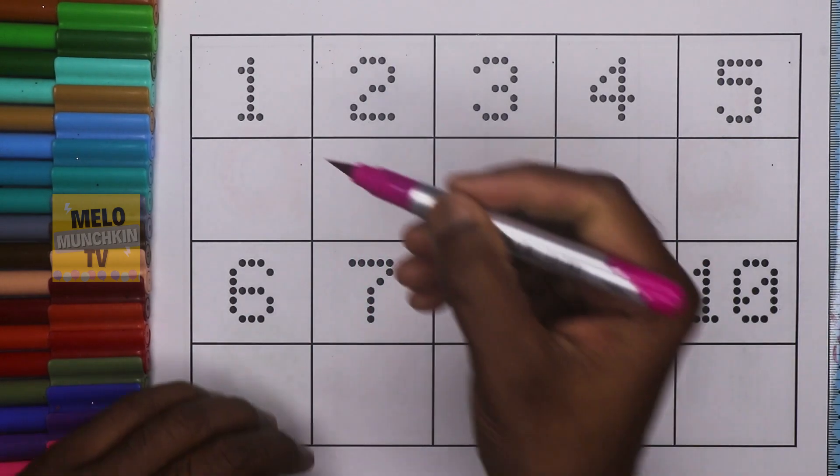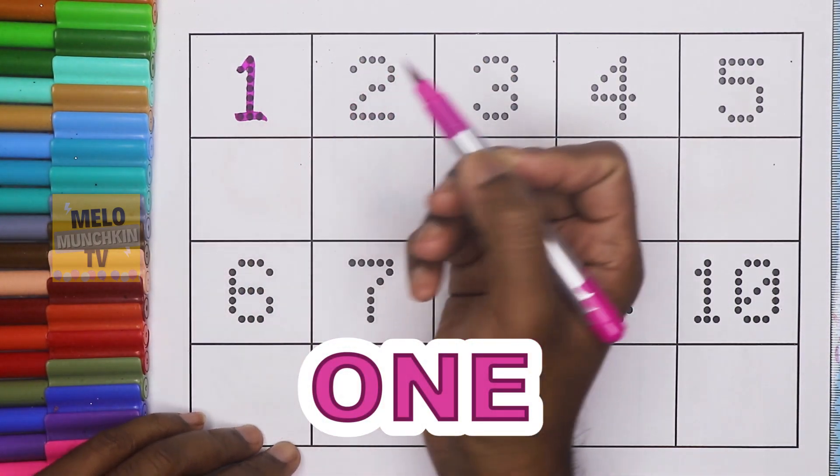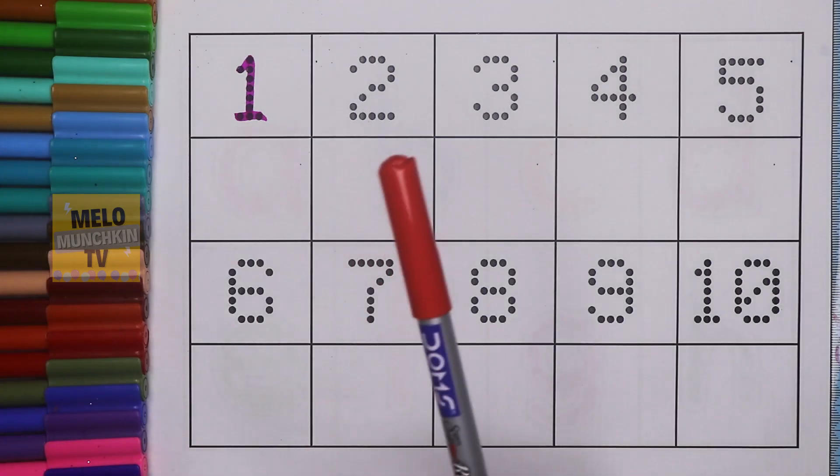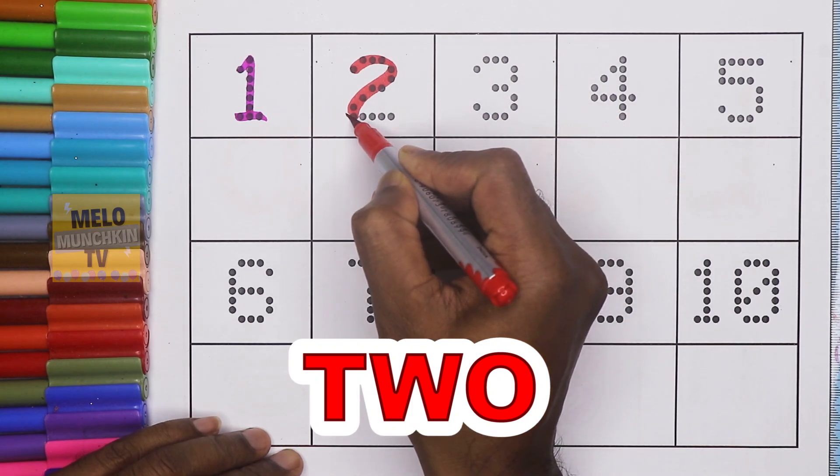Dark pink color. This is number 1. O-N-E. 1. Red color. This is number 2. T-W-O. 2.